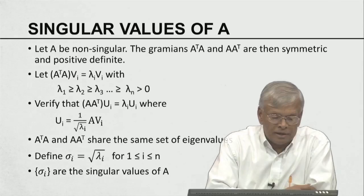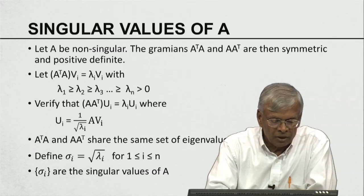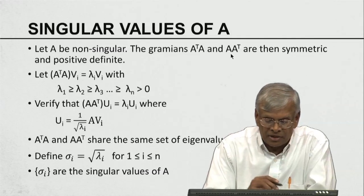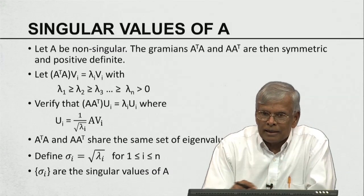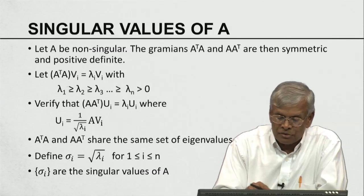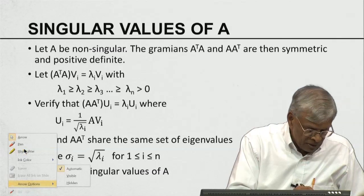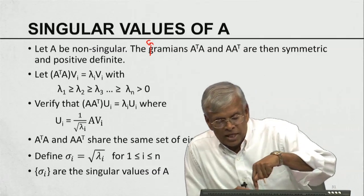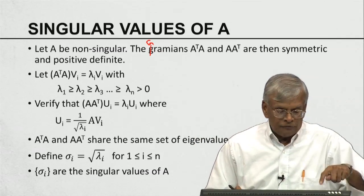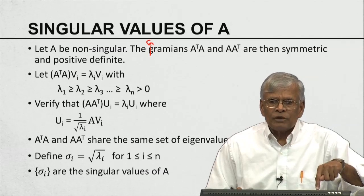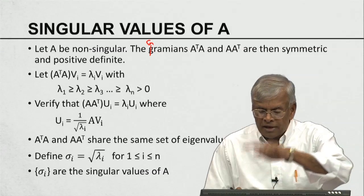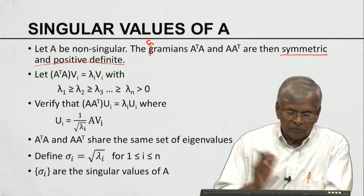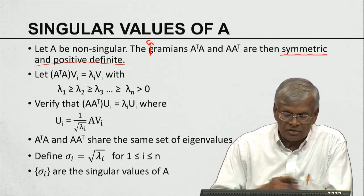Now we introduce another related concept: the singular values of A. Let A be a non-singular matrix. The Gramians AᵀA and AAᵀ are then symmetric positive definite. If A is non-singular and full rank, then AAᵀ and AᵀA are both symmetric and positive definite. This is a fundamental result relating non-singular matrices to the symmetric positive definite property.